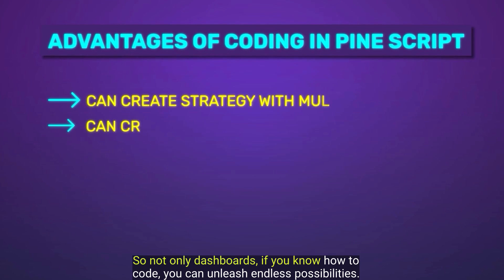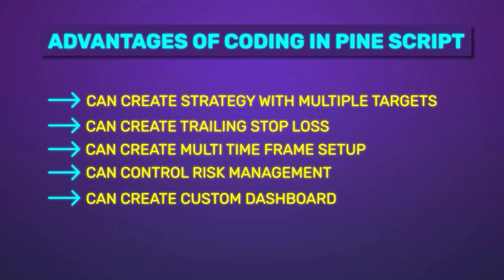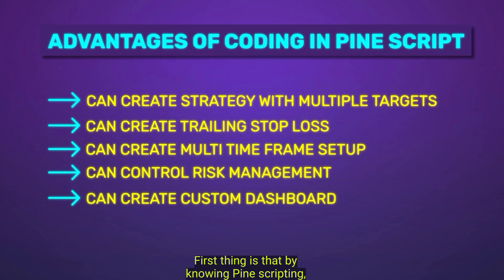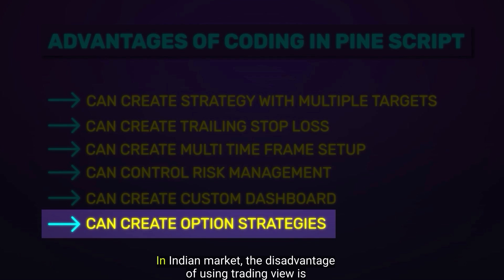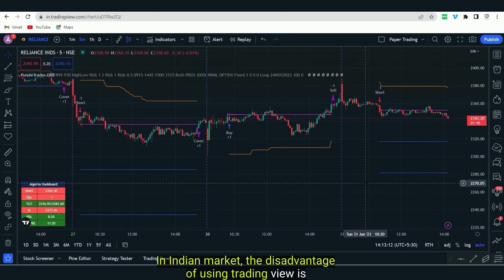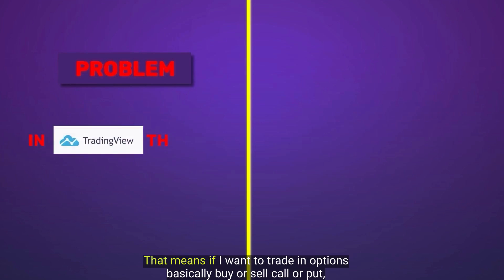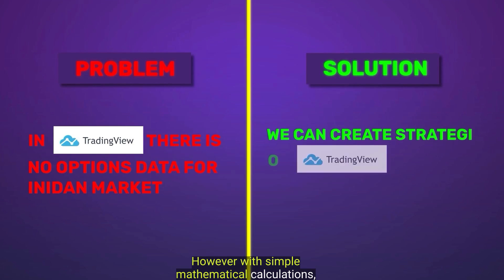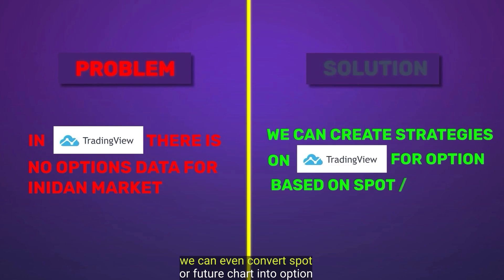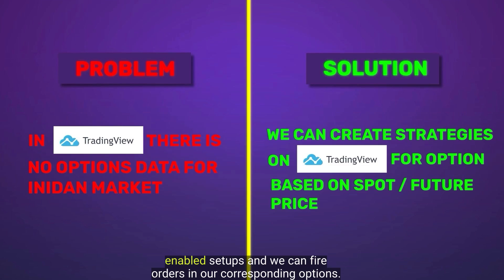Not only dashboards — if you know how to code you can unleash endless possibilities. By knowing Pine Scripting we can even convert normal strategies into option-enabled strategies. In the Indian market the disadvantage of TradingView is that it does not cater to options data. However, with simple mathematical calculations we can convert spot or futures charts into option-enabled setups and fire orders in our corresponding options.